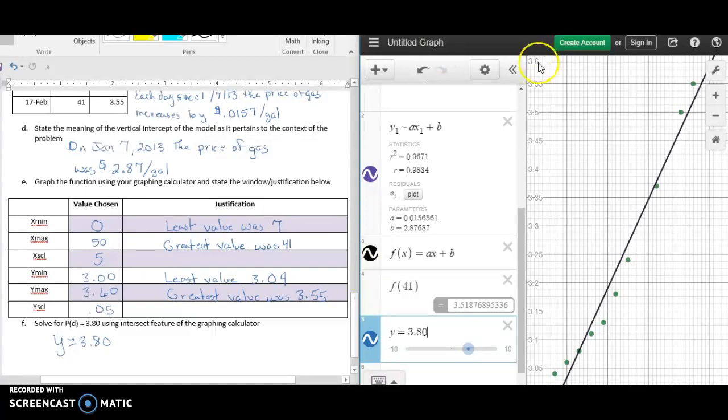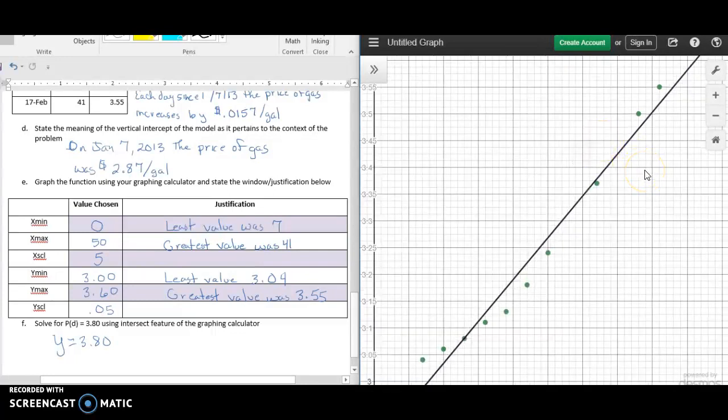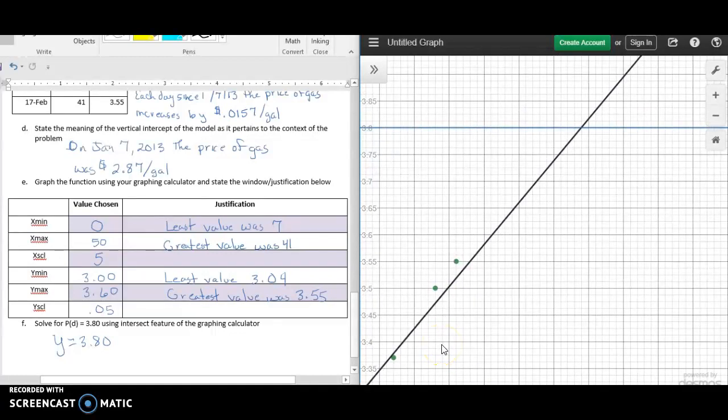I'm going to go back to my graph, and this time I'm just going to move the graph so that I can find $3.80. I know I had to move up some, and then I'm just going to click on that point. You'll see that it gets kind of superimposed there, and then when you click on it, it'll hold it.